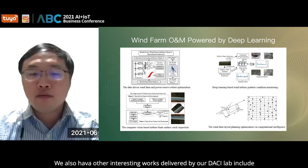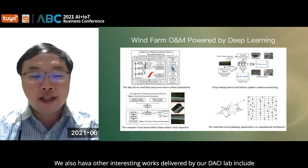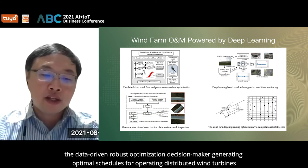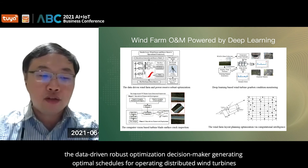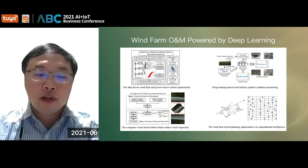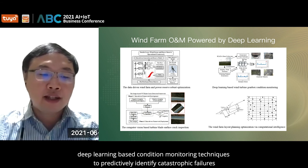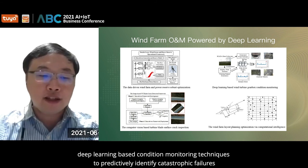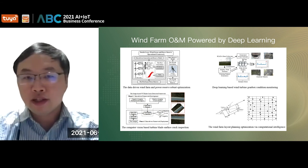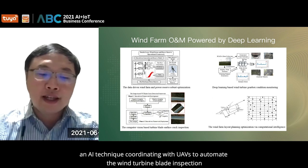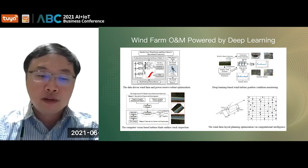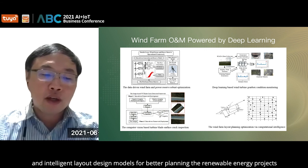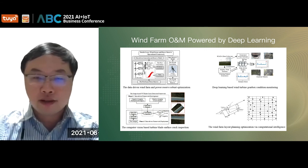We also have other interesting works from our DASY Lab, including a data-driven robust optimization decision maker generating optimal schedules for operating distributed wind turbines, deep learning-based condition monitoring techniques to predictively identify catastrophic failures, an AI technique coordinating with unmanned aerial vehicles to automate wind turbine blade inspection, and intelligent layout design models for better planning of renewable energy projects.